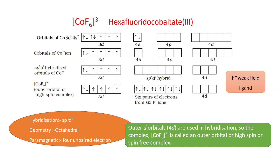Next is hexafluoridocobaltate(III), [CoF₆]³⁻. Again, the central ion is Co³⁺ with electronic configuration 3d⁷ 4s² in the neutral atom. The oxidation state of cobalt is +3: six F⁻ ions each carry −1, giving a total of −6, and since the complex charge is −3, x + (−6) = −3, so x = +3. This gives the d-electron configuration 3d⁶. In this complex, hybridization is sp³d².